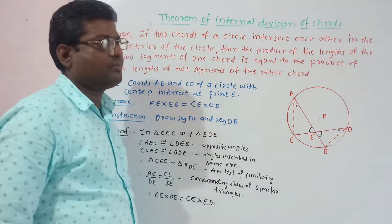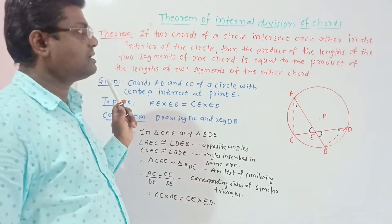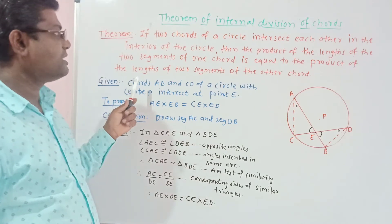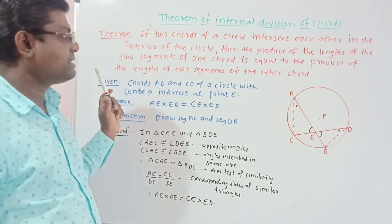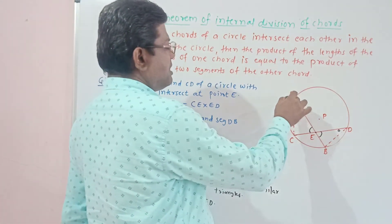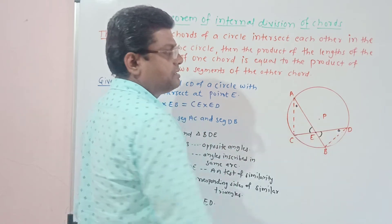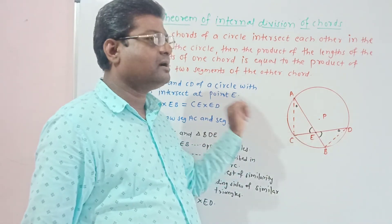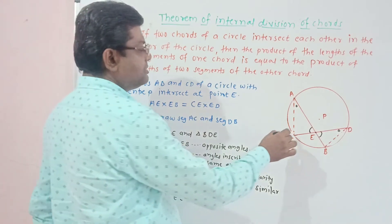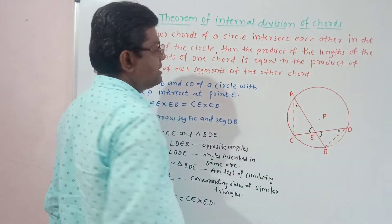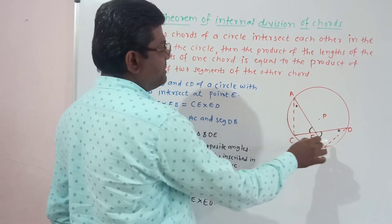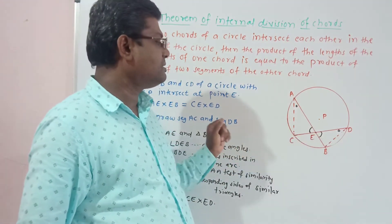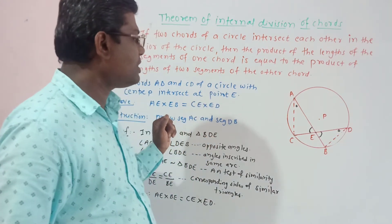Theorem of internal division of chords: if two chords of a circle intersect each other in the interior of a circle, then the product of the lengths of the two segments of one chord is equal to the product of the lengths of the two segments of the other chord. Chords AB and CD of a circle with center P intersect at point E inside the circle. We have to prove AE × EB = CE × ED.